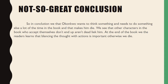Now we're going to look at a conclusion — skipping over the body paragraphs — for the same paper. Here's one that's not so great: 'So in conclusion, we that Okonkwo wants to think something and needs to do something else a lot of time in the book and that makes him die. We see that other characters in the book who accept themselves aren't dead like him. At the end of the book, we the readers learns that balancing the thought with actions is important. Otherwise, we die.' Do we even need to talk about why that's a bad paragraph? And yet this exacerbates problems I see in many conclusions.